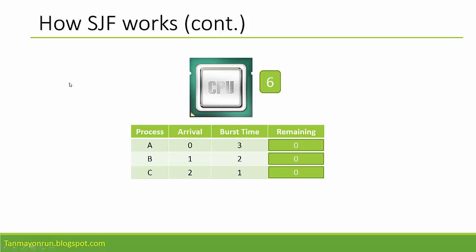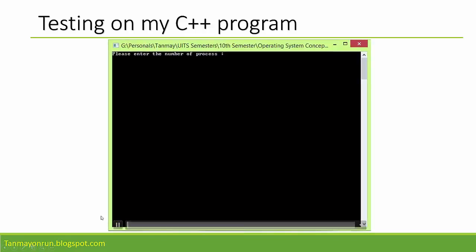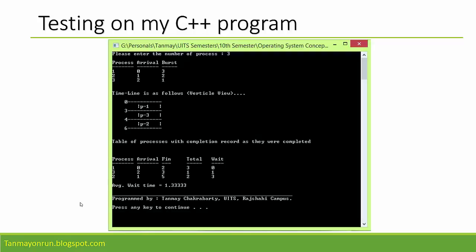Now let's look at my C++ program using this same input. We enter 3 processes: Process 1 with arrival time 0 and burst time 3; Process 2 with arrival time 1 and burst time 2; Process 3 with arrival time 2 and burst time 1. You can see that it works on P1 from 0 to 2 seconds, at 3 seconds it works on P3, and at 4 and 5 seconds it works on P2 — the same output as our previous example.